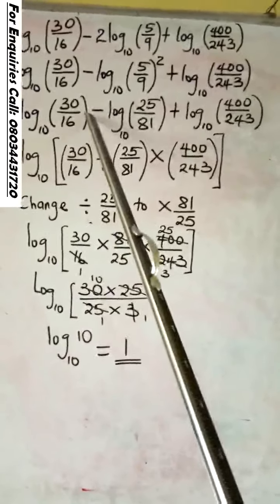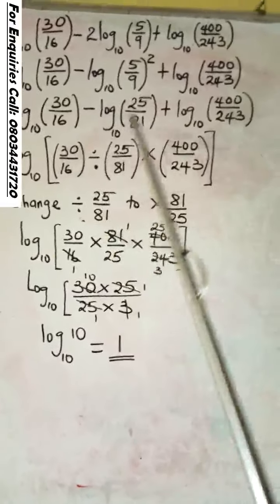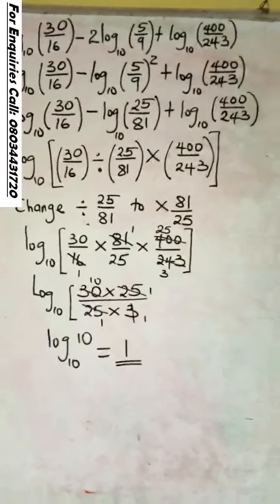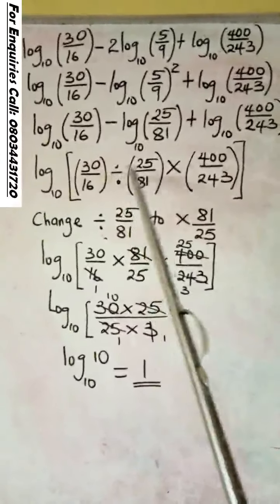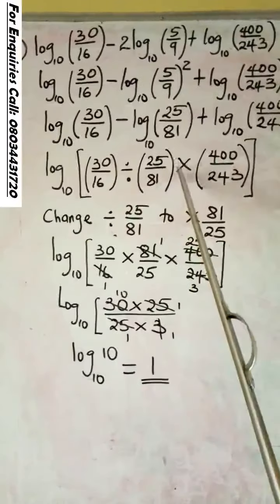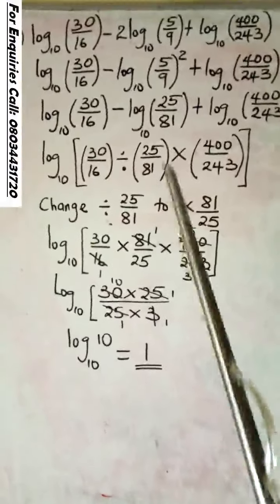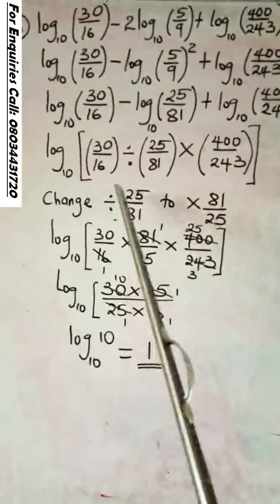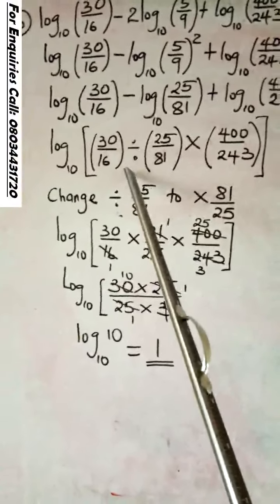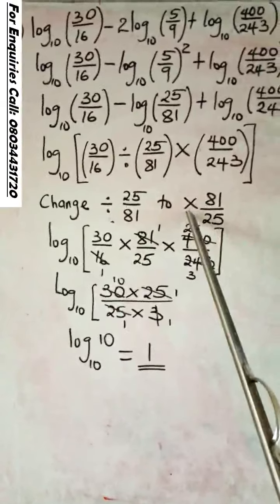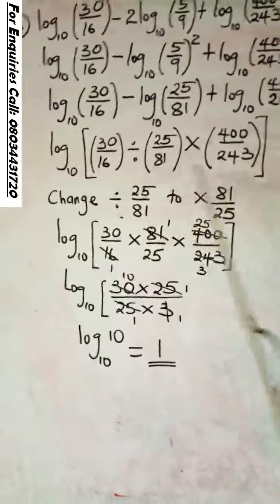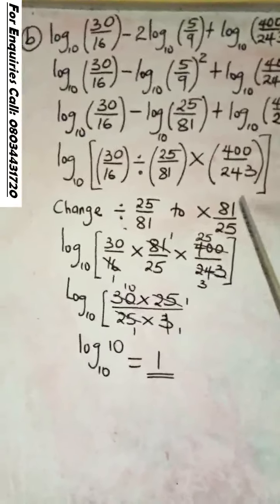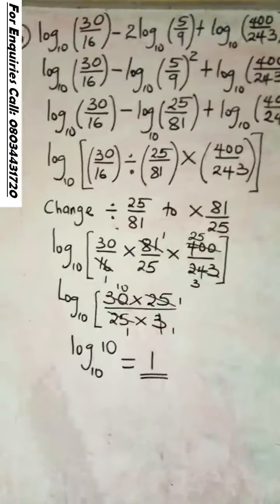So what you do now is to change this subtraction to division, addition to multiplication. Remember our BODMAS. Division comes before multiplication. So for us to solve it, we are going to change this division sign to multiplication sign. When you do that, you will turn 25 over 81 upside down. It will be 81 over 25.